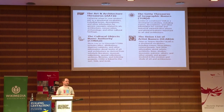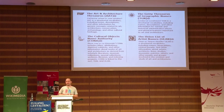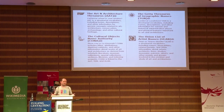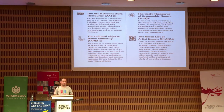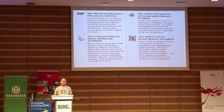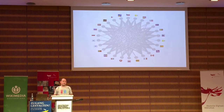One of the things we use a lot is authority control. You're all in libraries or museums, so you know the concept of authority control — we love it. It takes a concept in Wikidata and links it to a concept in an external database. For example, these are the four that Getty publishes. We use the Union List of Artists' Names the most, but AAT for describing concepts is also quite useful.